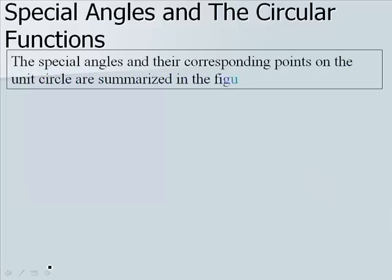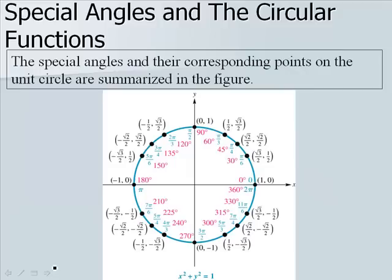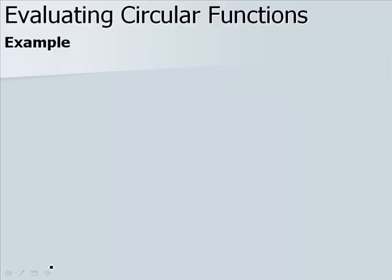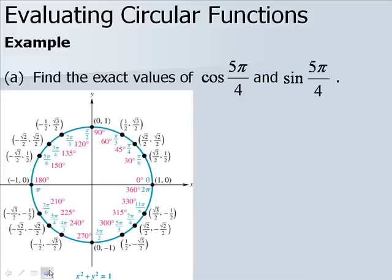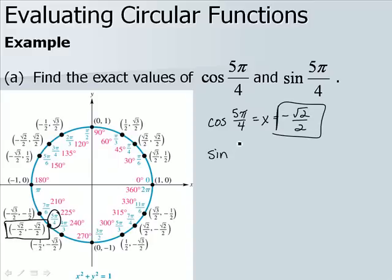The special angles and their corresponding points on the unit circle are summarized in the following figure. You may find it easier to use the special triangles outlined previously instead of memorizing the unit circle, but you're welcome to memorize it as well. For example, to find the cosine and sine of 5π/4: this angle is in quadrant 3, and both values are −√2/2. So cosine of 5π/4 = −√2/2 and sine of 5π/4 = −√2/2.